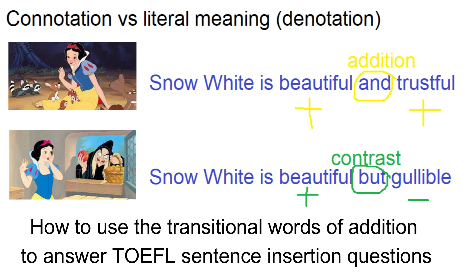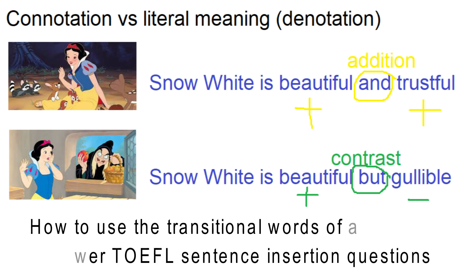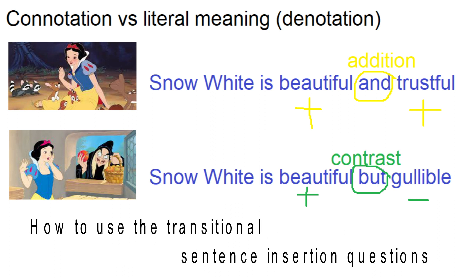For example: 'He is handsome, but gullible.' Today, we'll learn how to use transitional words of addition as clues to answer TOEFL sentence insertion questions. From the connotation video, you know that you should use a transitional word of addition when the subsequent idea continues the same connotations — that is, both negative or positive.